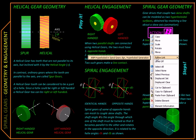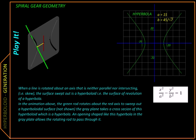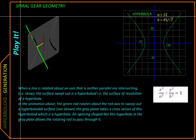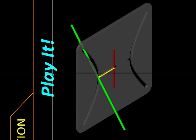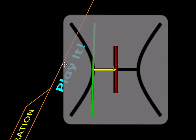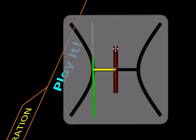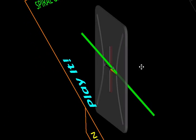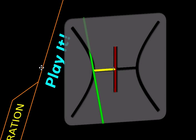Spiral gears have a very interesting geometry, and let's take a look at how they are generated. We are going to look at an animation. We have a plate — made transparent so we can see what's happening behind it. At the center of the plate there is a red shaft, attached to which is a yellow rod, and mounted on the yellow rod is a green rod. The green rod and the red rod are two skew lines in space.